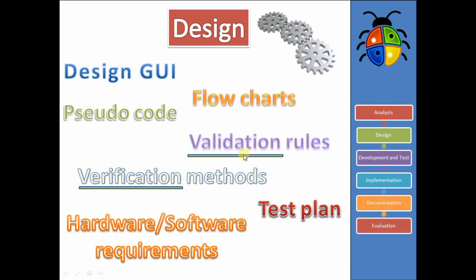We would implement our validation and verification rules and methods. We would actually use them at this point — for verification, copying over, and for validation, we would say in our database, make sure we have the correct data type rules. Hardware and software would of course mean buying the computers or installing the correct software that we need. And the test plan we'll come to in a moment.